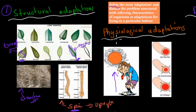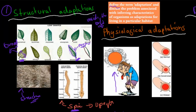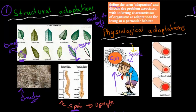Physiological adaptations happen inside the body — they're responses the body produces to cope with an environment. For example, this person is sweating because of the heat from the sun. Sweat is produced as a physiological response: the body tells the sweat glands to produce sweat. It's not structural — it's not just there; the body has to actively trigger it.